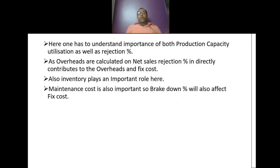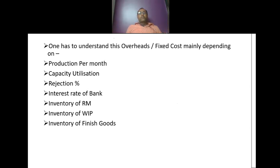Reducing breakdown, reducing inventory, and reducing rejection will help in improving productivity and net sales, and will help in reducing your fixed cost. One has to understand that overhead or fixed cost depends mainly on: production per month (productivity), capacity utilization, percentage of rejection, bank interest rate, and inventory of raw material, WIP, and finished goods.